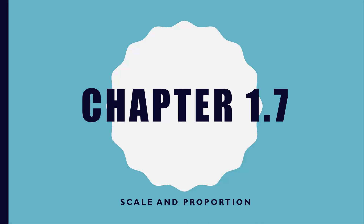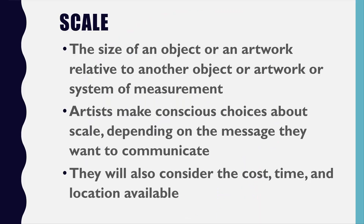Hello, this is your instructor Ashley Bell. Right now we're going to look at chapter 1.7, which is on scale and proportion. Scale is the overall size of an object, and knowing if the scale is large or small is determined by comparing it to another object.